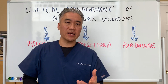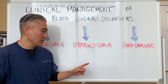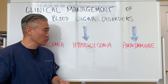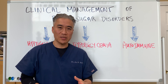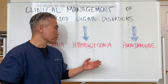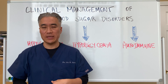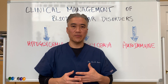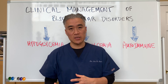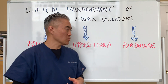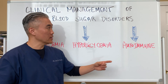On the flip side, we have patients who have hyperglycemia — these are the people who have diabetes or insulin resistance. These are the people who after a meal feel sleepy; they have a big dinner, sit down on the couch, and fall asleep. So how do we manage these types of patients?